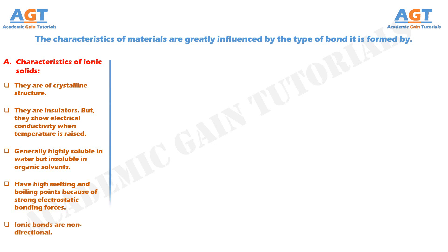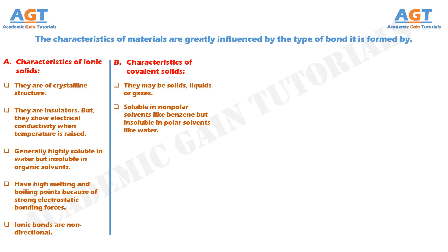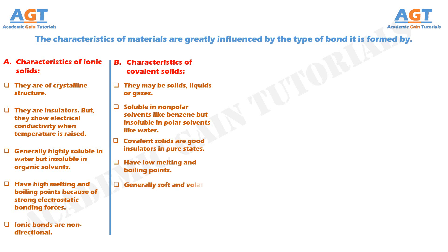Number 2: The characteristics of covalent solids. They may be solids, liquids, or gases. They are soluble in non-polar solvents like benzene but insoluble in polar solvents like water. Covalent solids in pure states are good insulators. They have low melting and boiling points. They are generally soft and volatile. They are transparent to long wavelengths and opaque to shorter wavelengths.